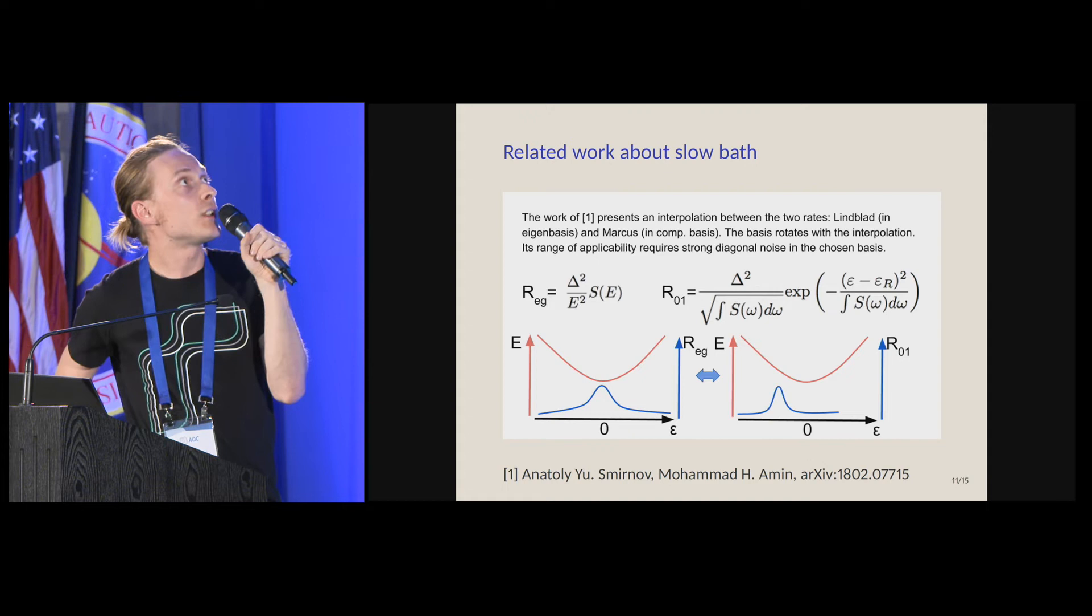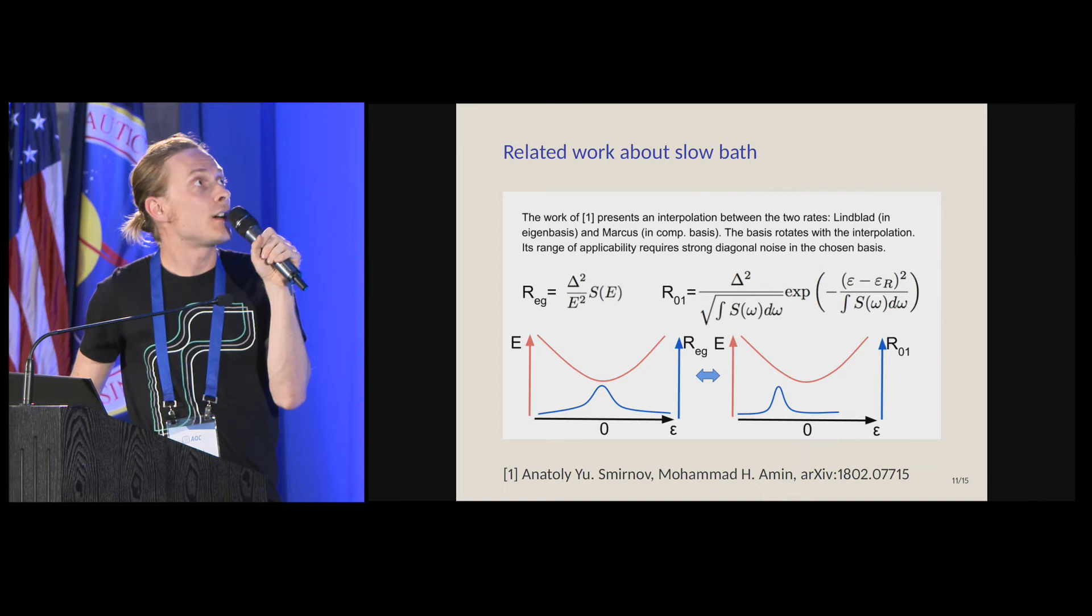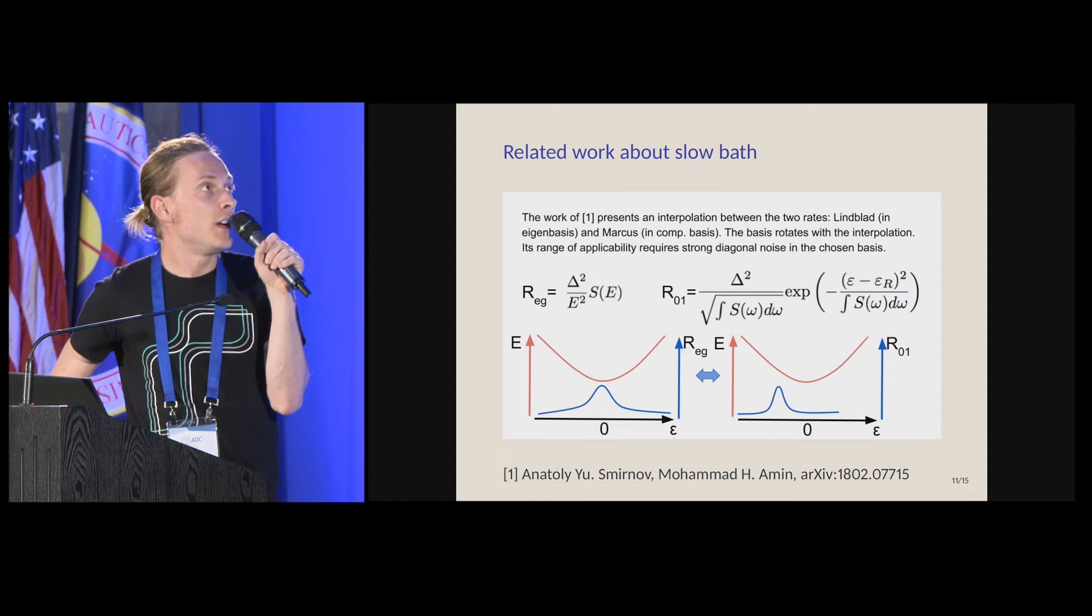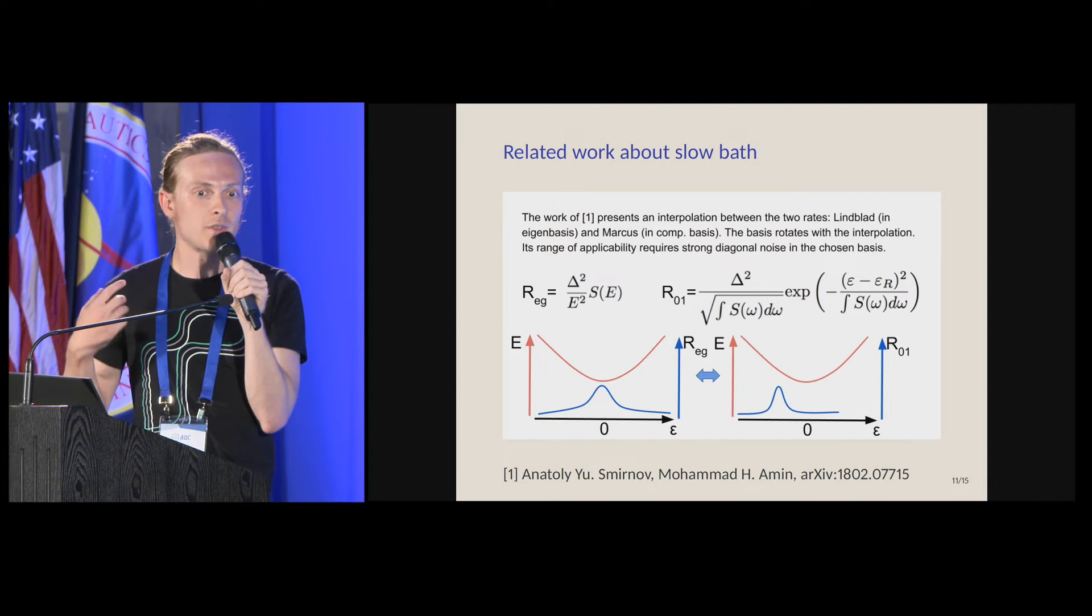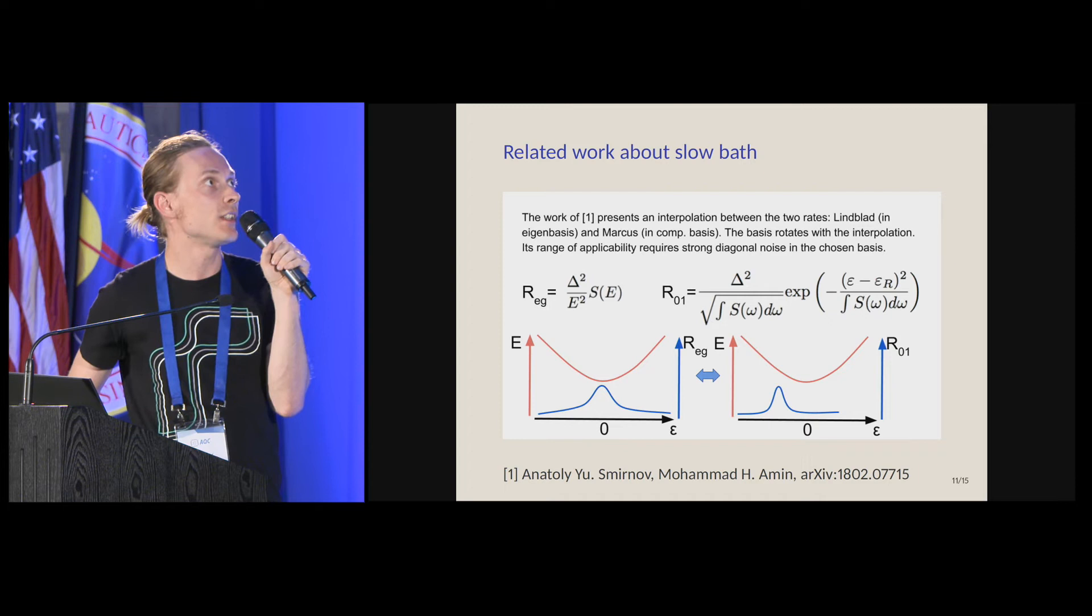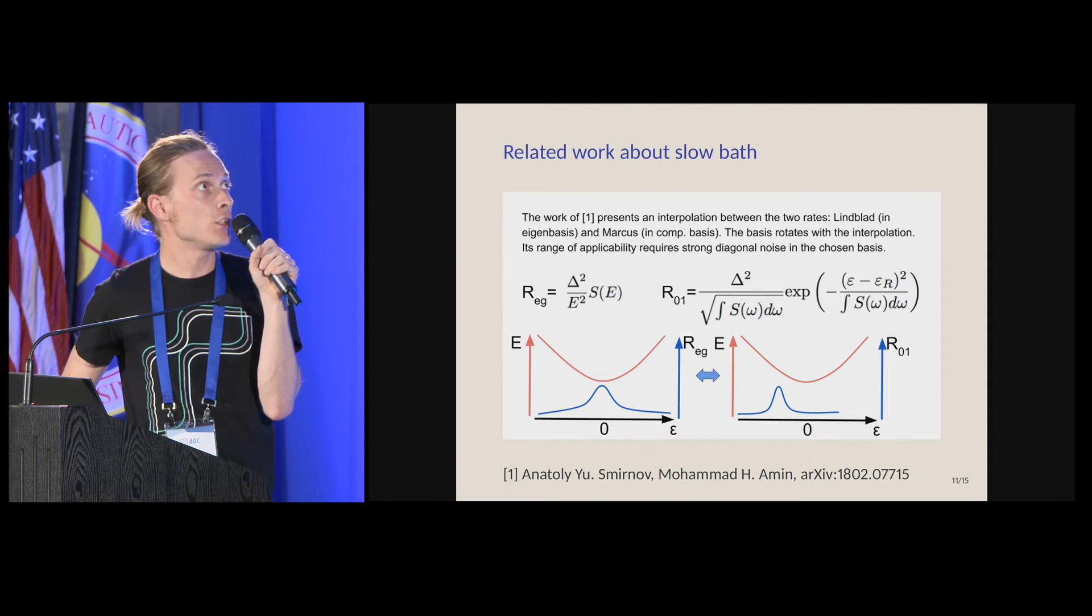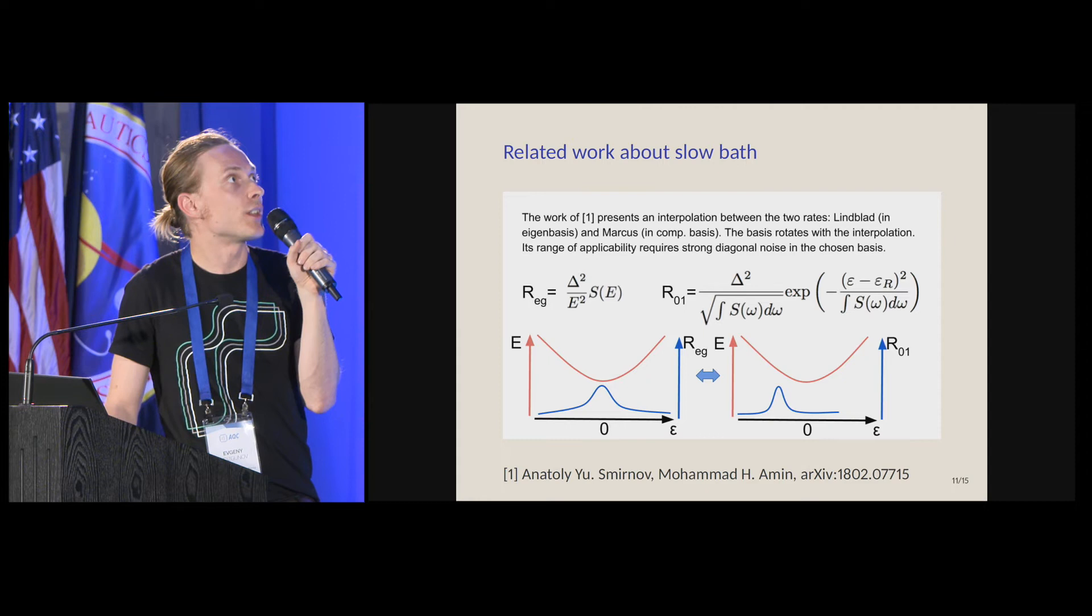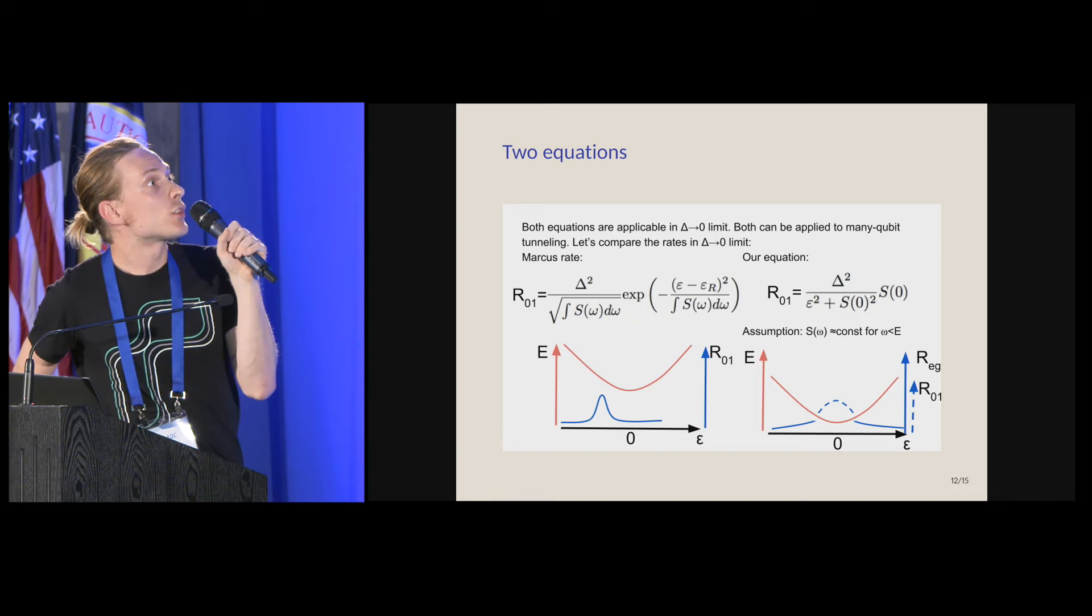What about Smirnov-Amin? For them, they kind of interpolate between two very well-known, for a long time, limits of the tunneling rates. They actually, under their assumption, define a kind of evolution of the diagonal for all the steps on the interpolation between these two limits. One limit is the Lindblad, same Lorentzian, and another limit has this strange Gaussian line shape. I will specifically consider that last limit, where the line shape is Gaussian, and I want to compare it with my own kind of Lorentzian line shape.